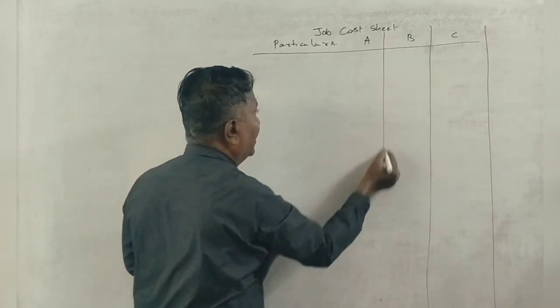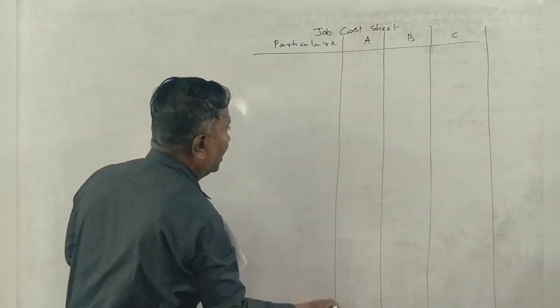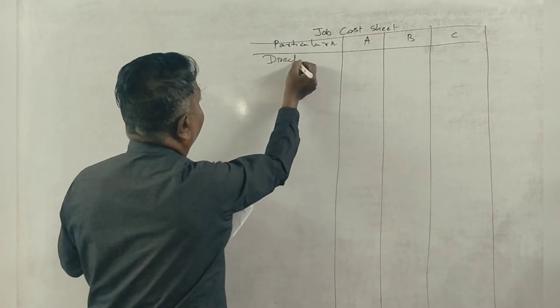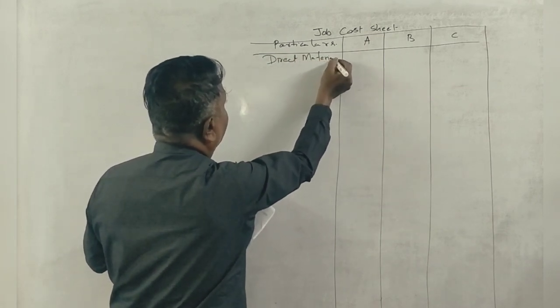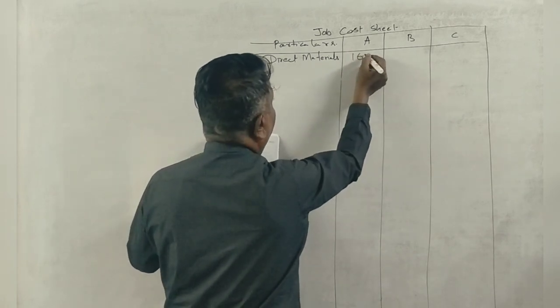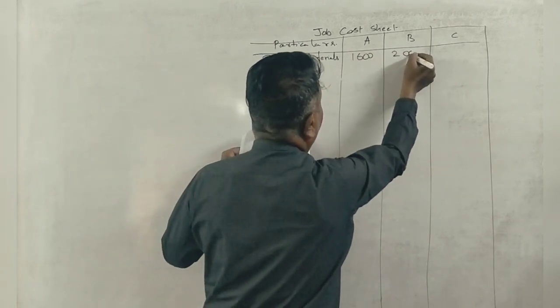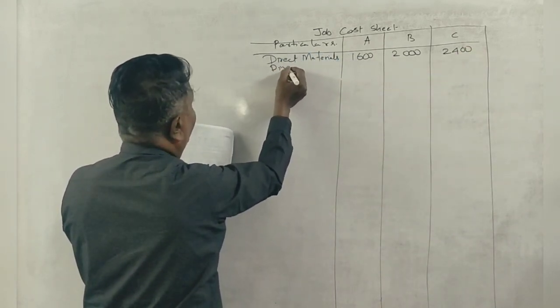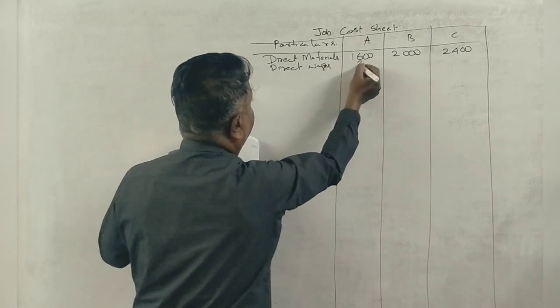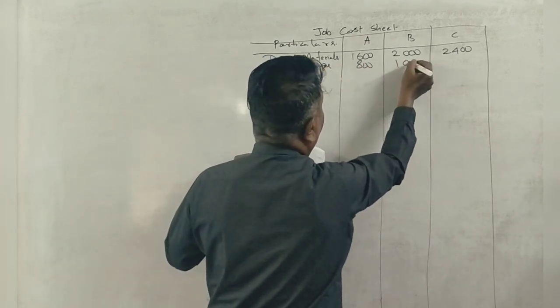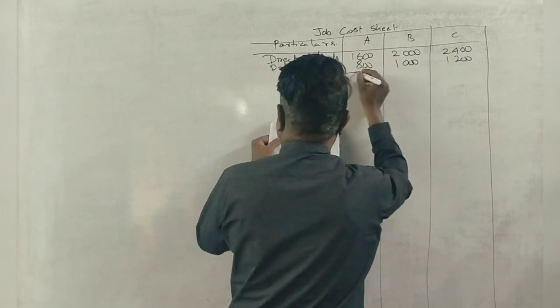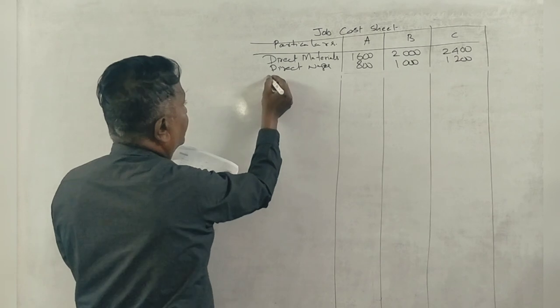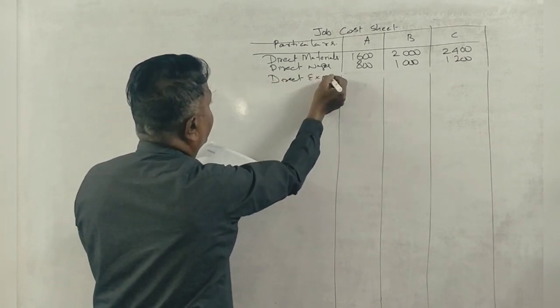First, prepare the cost sheet. First of all, direct materials: 1,600, 2,000, 2,400. Next, direct labor or wages: 800, 1,000, 1,200. Direct expenses: 160, 200, 240.